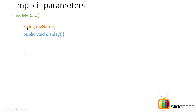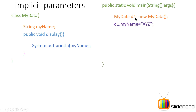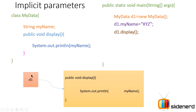Now let's look at implicit parameters in more detail. Inside class MyData, there is a String variable 'myName' and a method 'display' that simply prints the variable myName. In the main method, I say 'MyData d1 = new MyData' — d1 is a reference pointing to an object of type MyData. Then I say 'd1.myName = "XYZ"'.